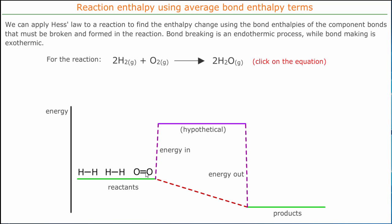We can explain this in terms of the breaking and making of chemical bonds. In our two water molecules on the right hand side, there are bonds made. To make these bonds we have to first of all break the bonds on the left hand side. Bond breaking, like breaking anything, requires energy — you can't break a window without a rock.